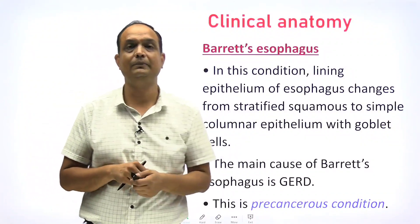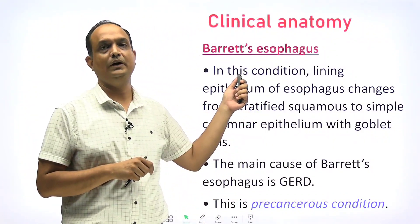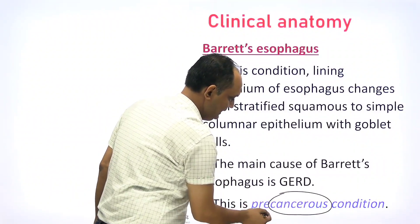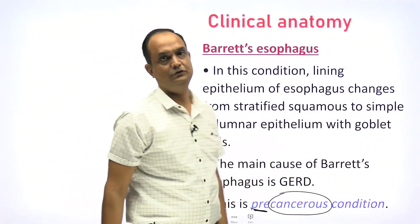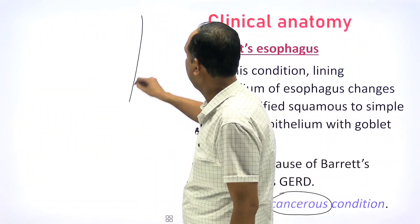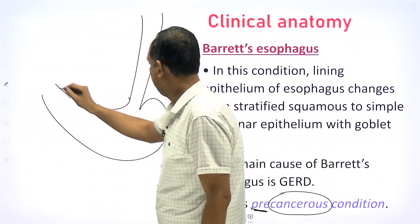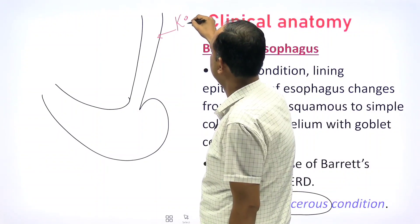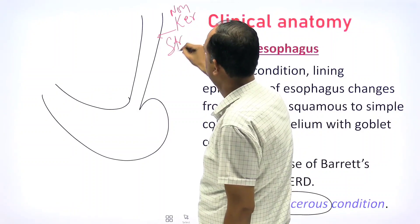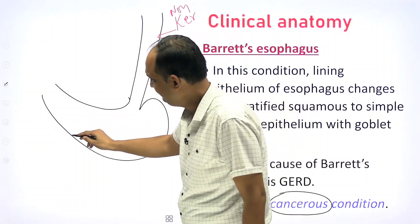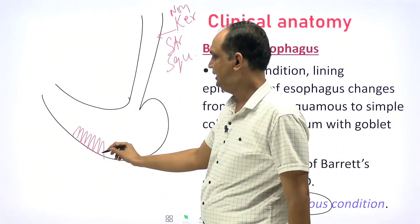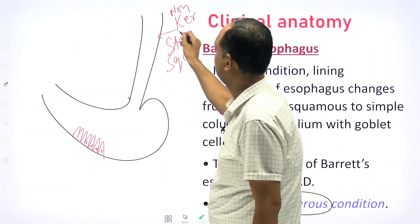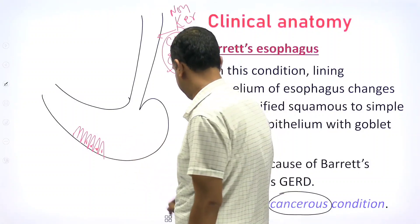Another important applied topic is Barrett's esophagus. It is important because if not diagnosed early it can lead to cancer — it is a pre-cancerous condition. The esophagus is lined by non-keratinized stratified squamous epithelium, while the stomach is lined by simple columnar epithelium. These two different epithelial types normally meet at the gastroesophageal junction.